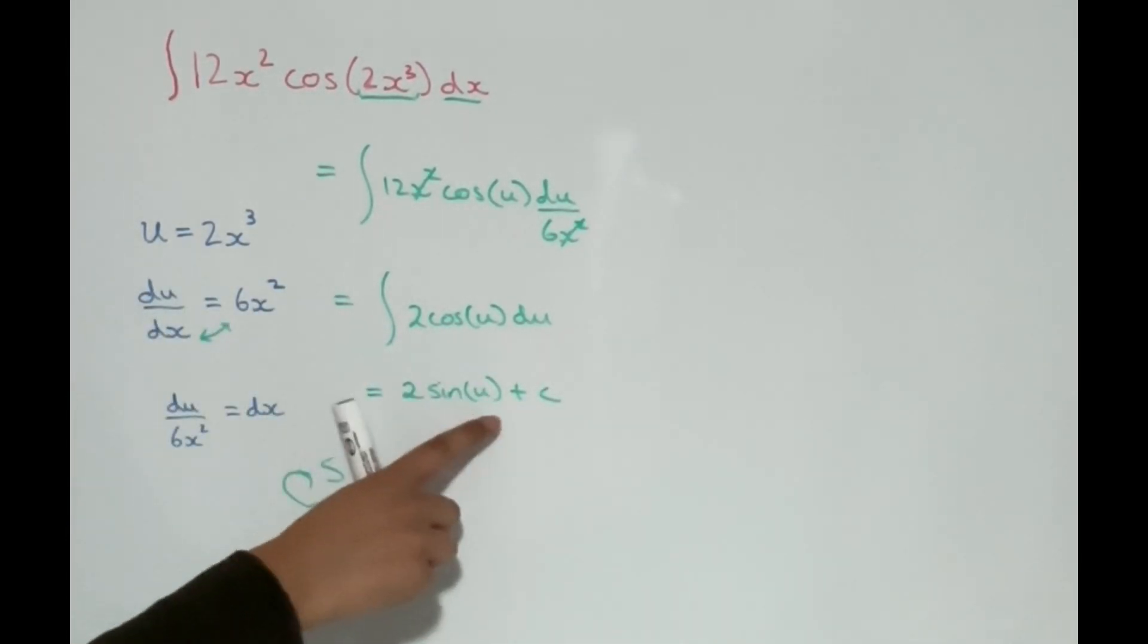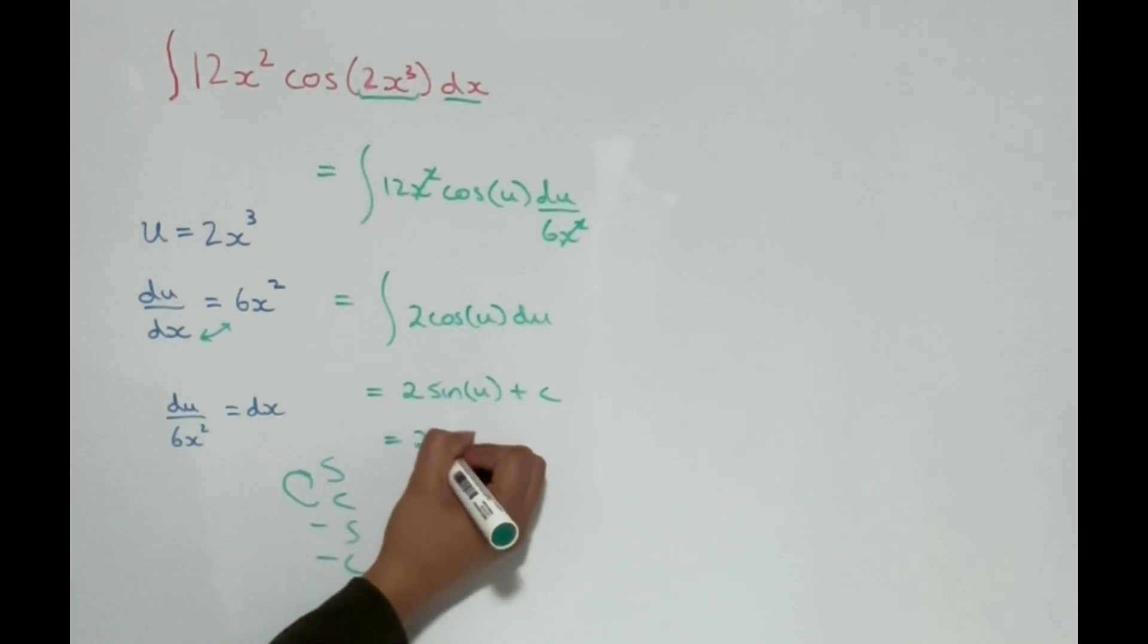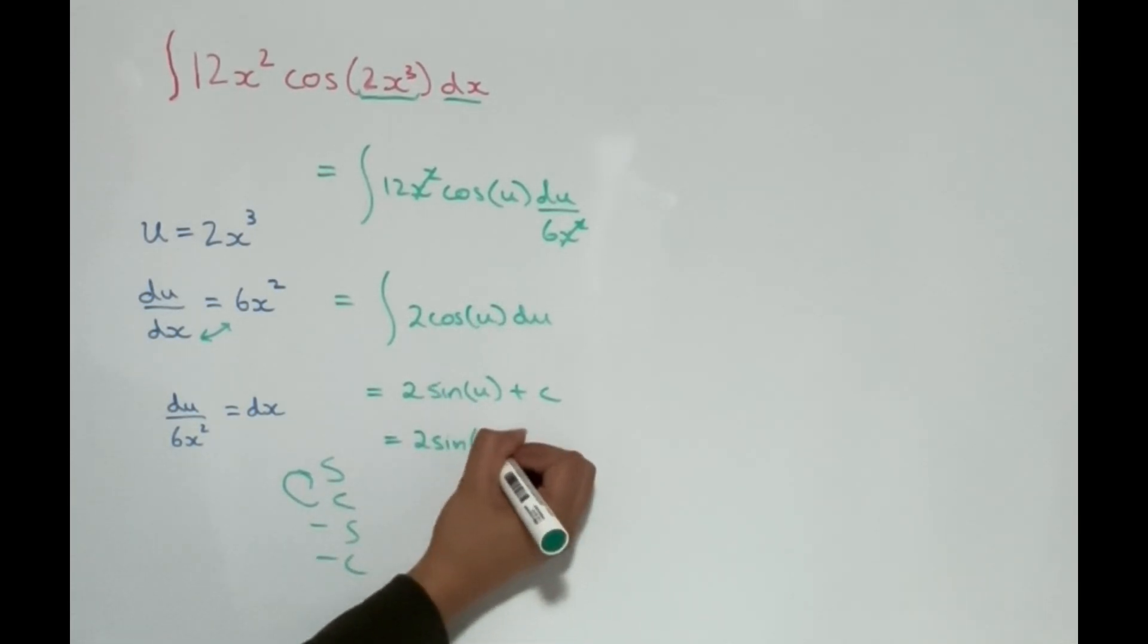And now we just have to replace u with what it originally was, which is 2x cubed. So this will be 2 times sine of 2x cubed plus c.